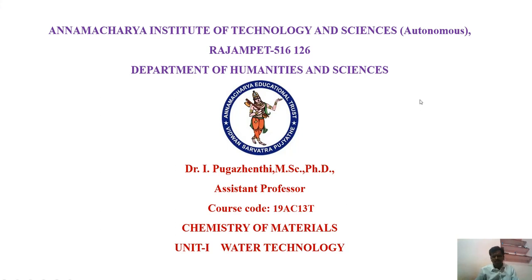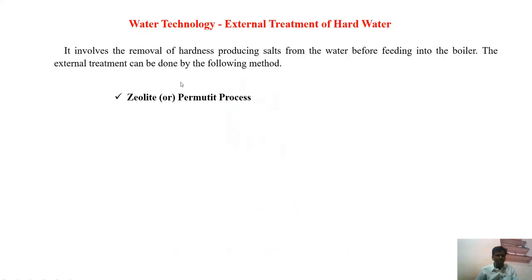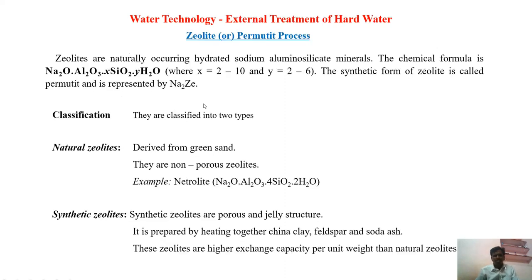Good morning. In this session we will discuss external treatment of water. We have already discussed ion exchange resins. Now we will discuss the permutit process or zeolite process. Zeolite is an inorganic material made up of aluminosilicates — specifically, sodium aluminosilicates. Zeolites synthesized in the laboratory are called permutit, meaning artificial zeolites, while those available naturally are simply called zeolites.